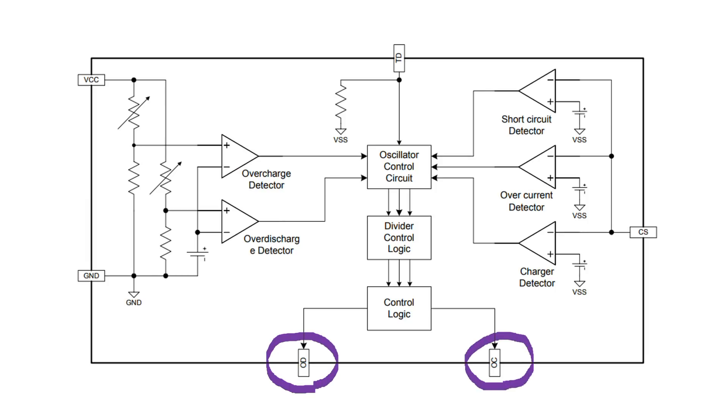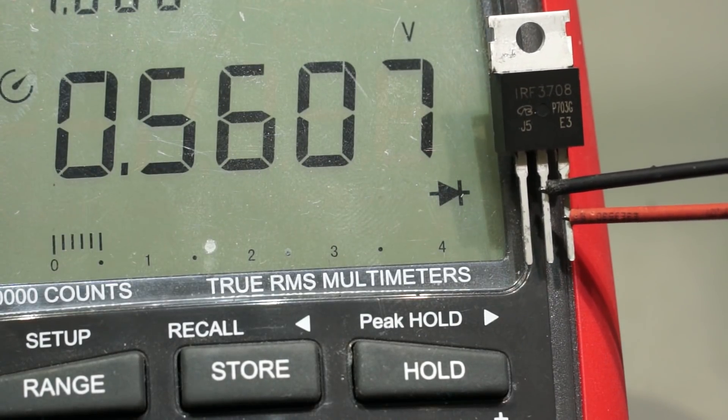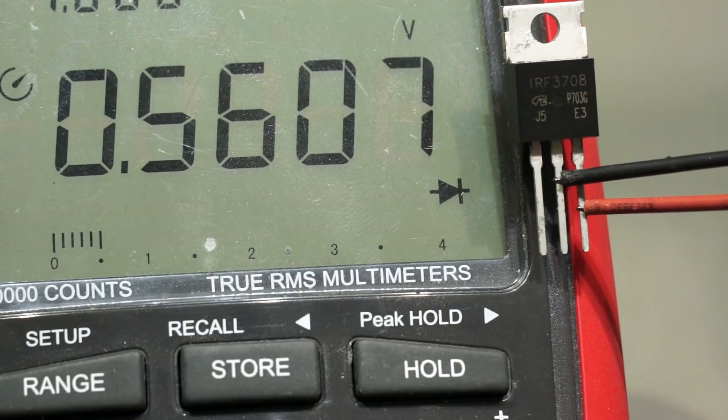But we are not finished. This small chip cannot switch big currents. To switch currents, we usually use MOSFET transistors. One to switch the charging on and off, and the other to switch the discharging on and off. Of course, they are connected in reverse direction, and their so-called body diodes are part of the design. Body diodes are intrinsic to most MOSFETs and make that a MOSFET always is on in its reverse direction, as we see here.